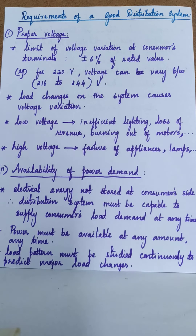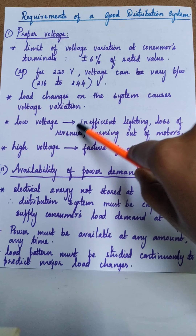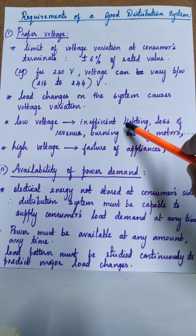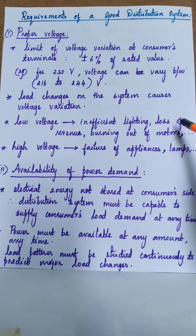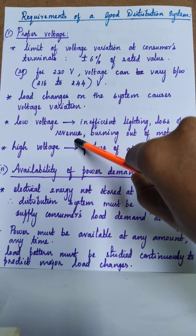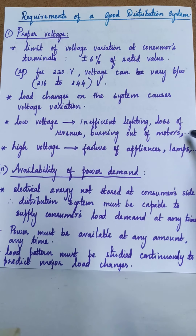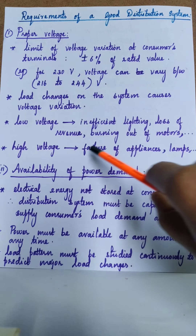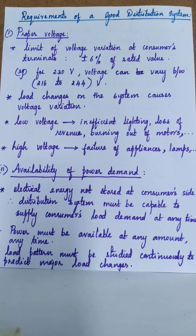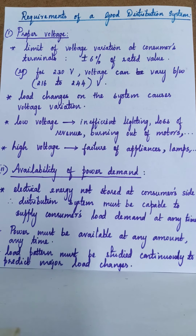Looking at the drawbacks of low voltage: it causes dimming of lamps, inefficient lighting, loss of revenue, burning out of motors, etc. On the other hand, the effects of high voltage include permanent failure of appliances connected to the particular phase-neutral, as well as burning out of lamps.